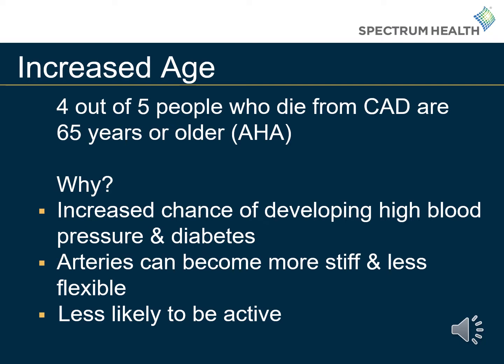According to the American Heart Association, four out of five people who die from coronary artery disease are 65 years or older. As we age, we have an increased chance of developing high blood pressure and diabetes. Our arteries can also become more stiff and less flexible. As we age, we are less likely to be active. Throughout our lives, many of us may develop a musculoskeletal issue or injury that starts our inactivity cycle. And once you fall out of a regular exercise routine, it can be difficult to restart. It is important to remember that no matter the age of a person, there is always some sort of physical activity that can be done.